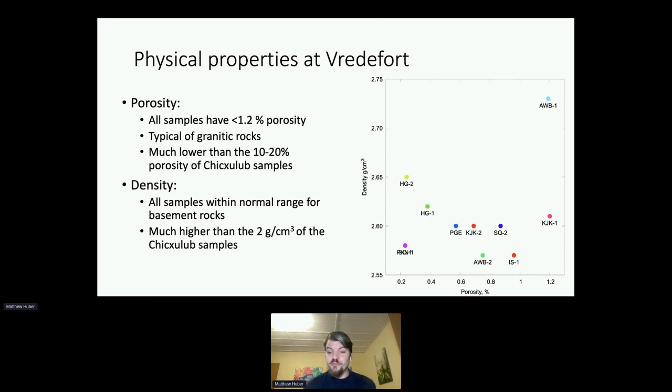We can also see this with porosity. The granites in the Chicxulub drill core had 10% or more porosity. The granites in this study, the maximum we measured was about 1.2% porosity, which is not particularly high. That's in the range we can expect for normal granites on the surface of the Earth.